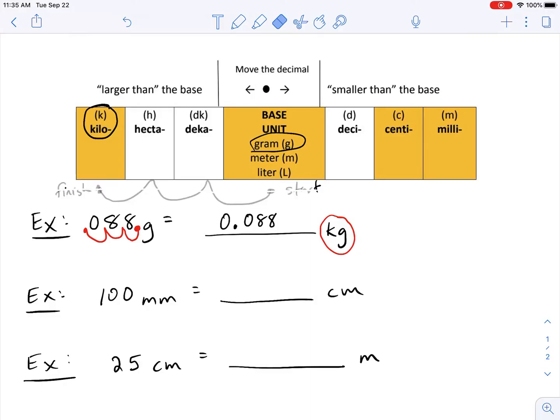All right, let's take a look at the next example, 100 millimeters to centimeters. So I'm starting with millimeters and I'm trying to get to centimeters. So millimeters is here, M. So this is my start. And centimeters is here. So there's my finish. So I just have to move it once to the left.